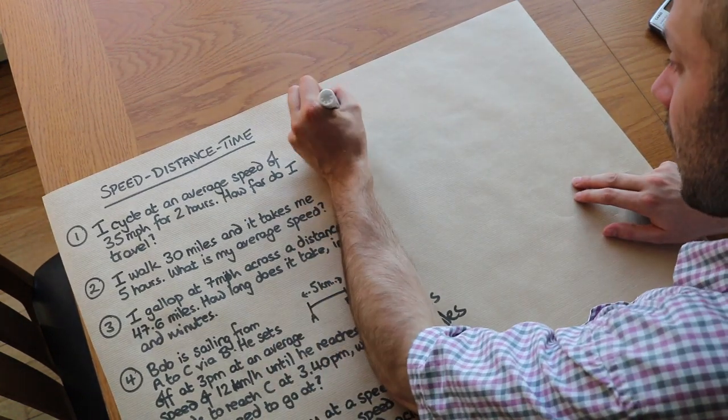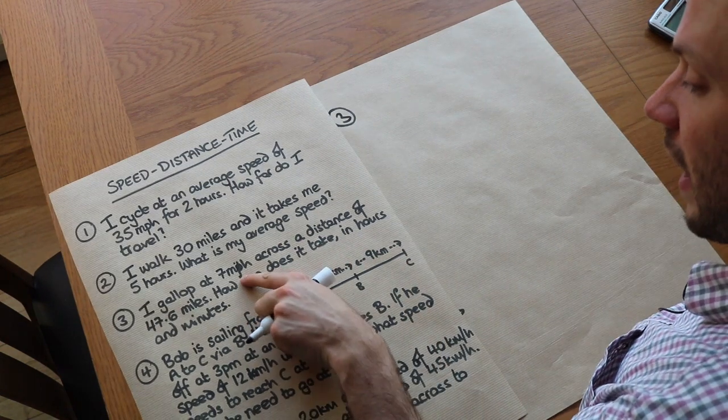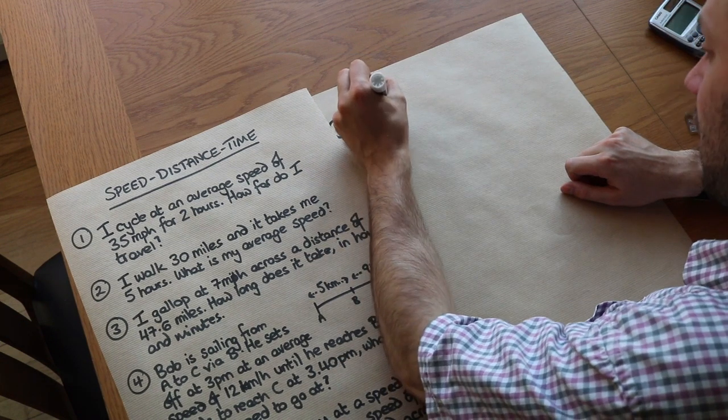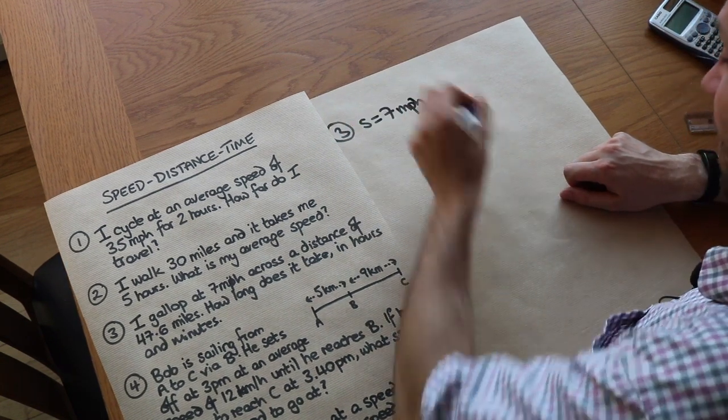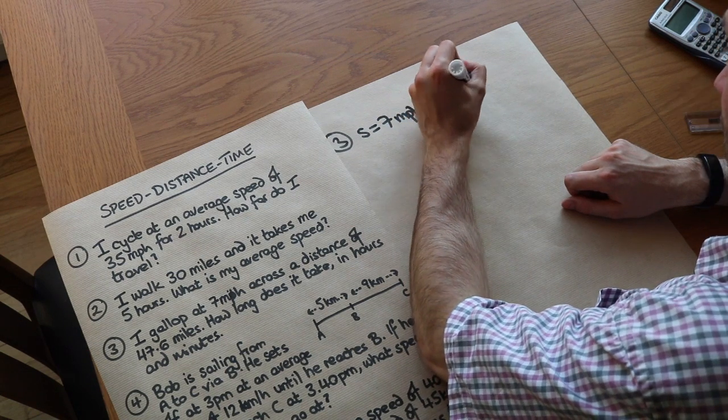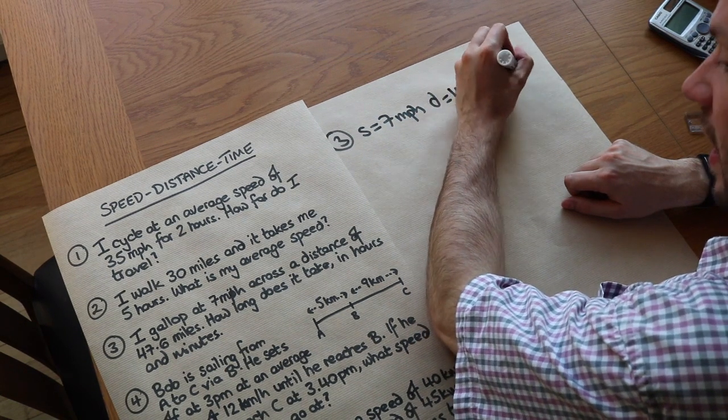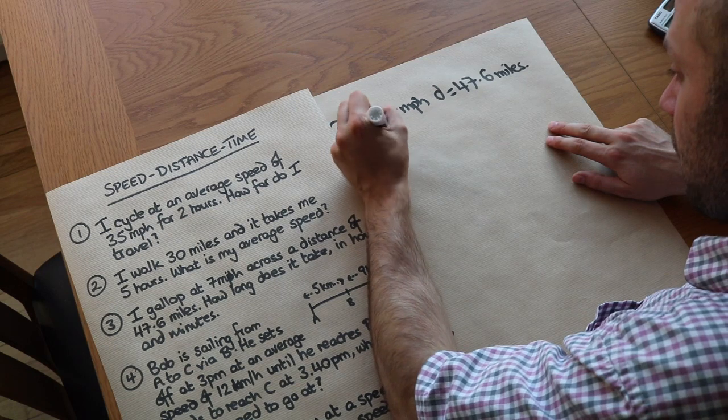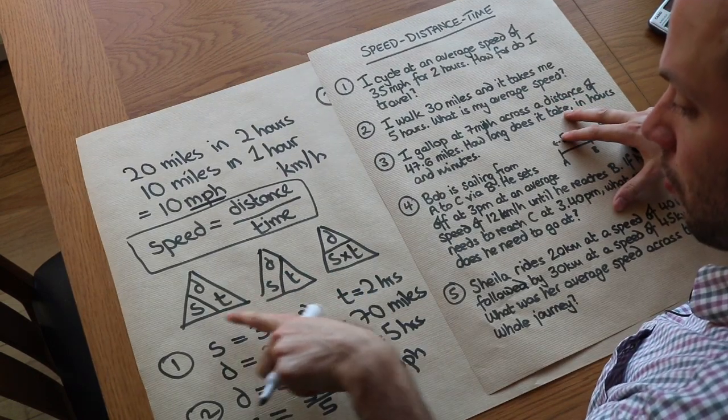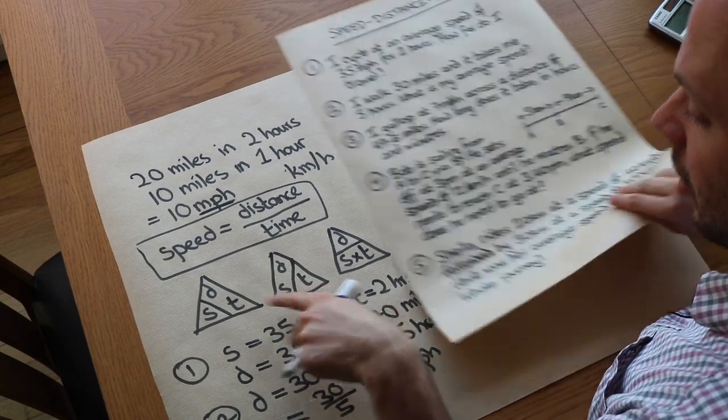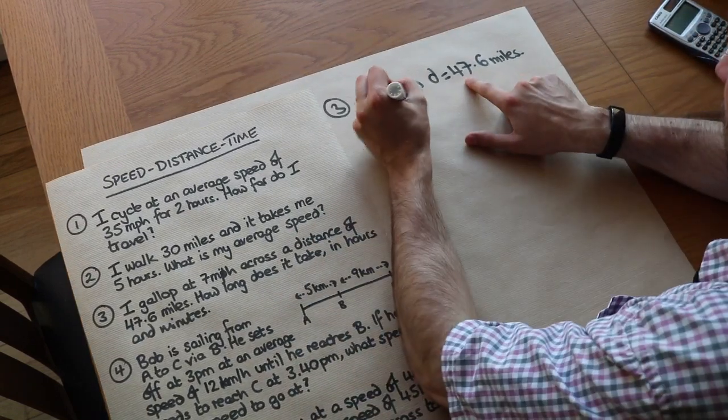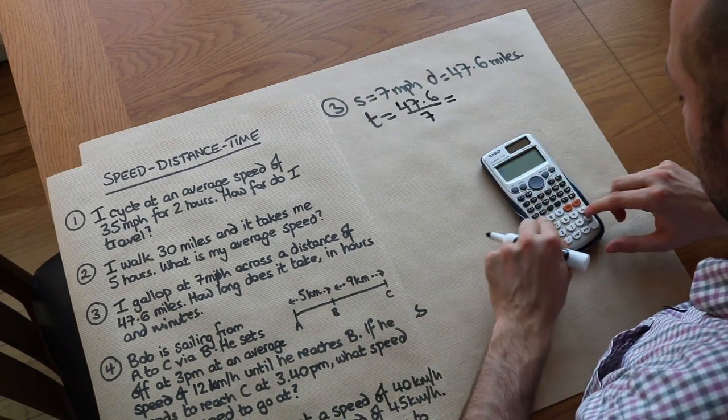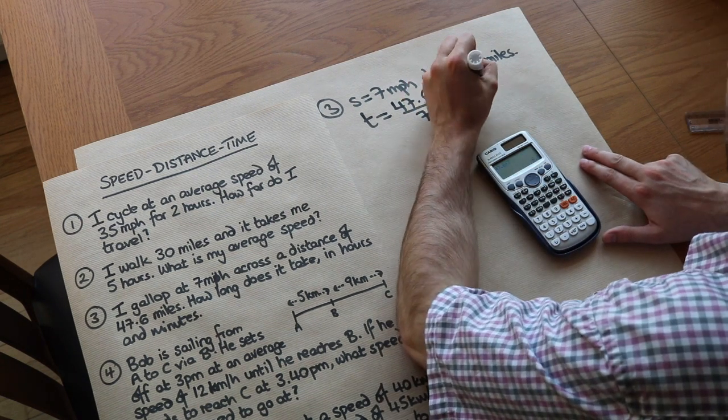What about question 3? And then it starts to get hard after that. I gallop at 7 miles per hour across a distance of 47.6 miles. So we've got a speed of 7 miles per hour and we've got a distance of 47.6 miles. How long does it take in hours and minutes? That's going to be the hard part at the end, converting it into hours and minutes. But to get the time we can use this triangle. Time is distance over speed. So time is distance 47.6 over speed 7. If I do that on a calculator, that gives me 6.8 hours.